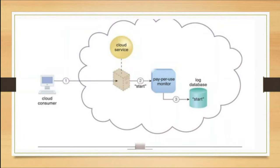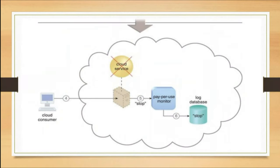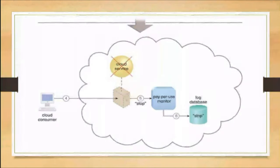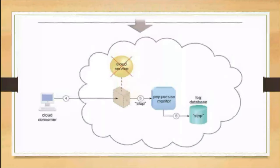Then the cloud consumer sends a request for the cloud service instance to be stopped. If whatever service we are using needs to be stopped — meaning the cloud consumer requested to stop — just like a stop request is made. So at that moment, the Pay Per Use Monitor receives the stop event notification for the resource or software. Wherever the cloud we used is stopped, the time-step will stop there. A record is maintained of where exactly it stopped.